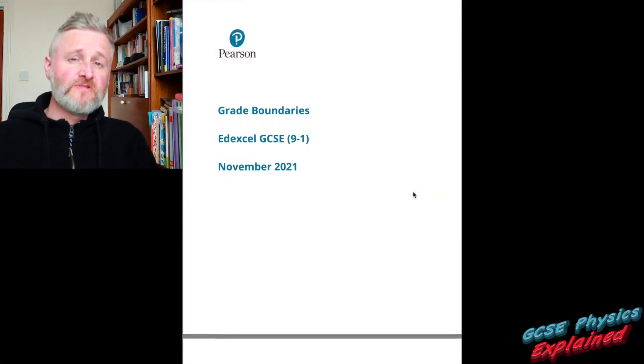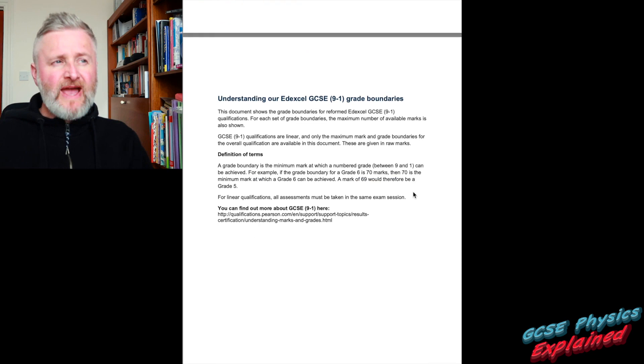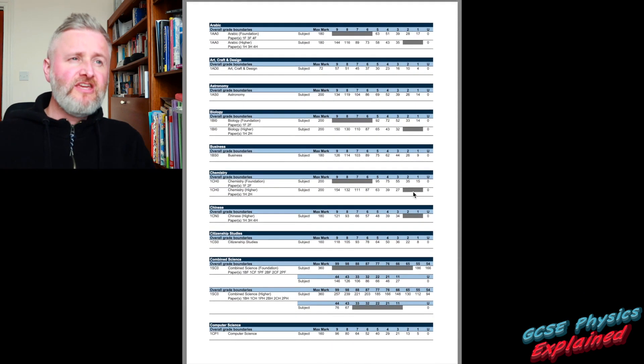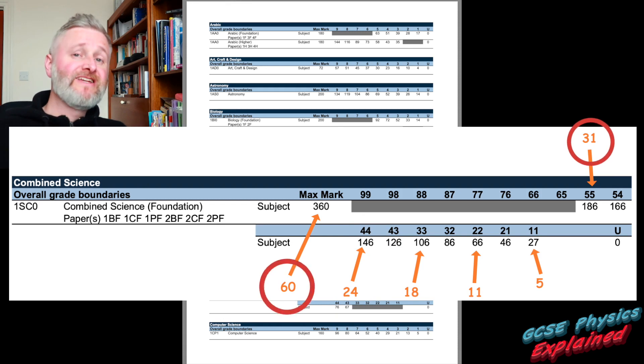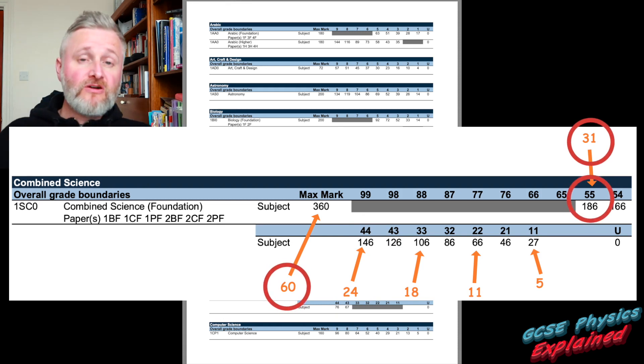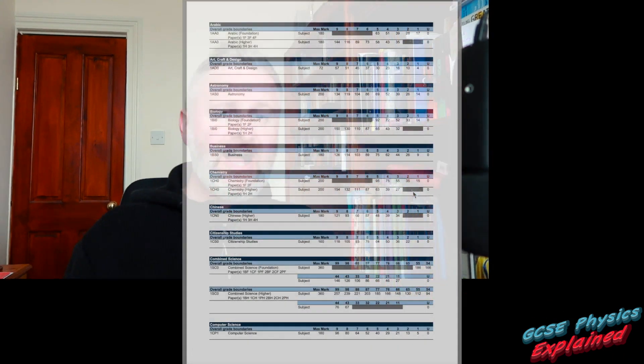On the combined science foundation papers, you only need about an average of 24 marks out of 60 on each paper just to get a level 4. So if you do well on the calculations and pick up a few extra marks on the explanations, you should be able to get level 4 quite comfortably. 31 marks out of 60 is a level 5, which is the top mark on the foundation paper. As I'm saying to my students, I think that's very achievable.